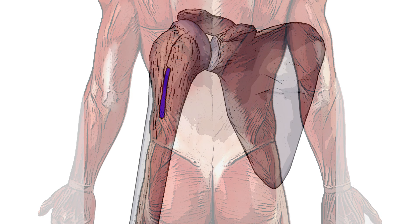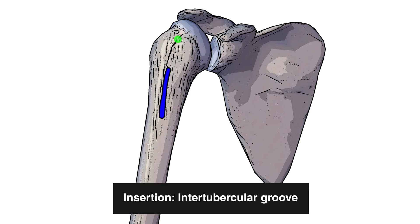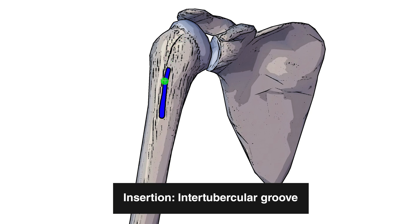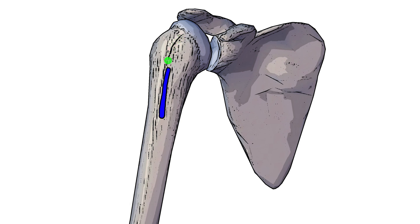Now we can see an anterior view of the scapula and the humerus, and you can see highlighted here in blue the insertion of the latissimus dorsi muscle — that's going to be on the intertubercular groove of the humerus. The intertubercular groove is also known as the bicipital groove, because the long head of the biceps brachii tendon passes down this area and sits inside that recess of the bicipital groove.